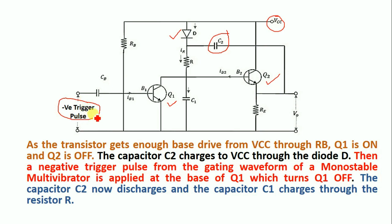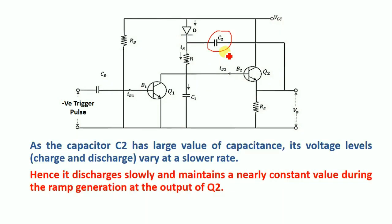A negative triggering pulse is applied using a monostable multivibrator. When this negative triggering pulse is applied to the base of transistor Q1, Q1 goes into the OFF condition. When Q1 is OFF, capacitor C2 discharges through capacitor C1, and C1 charges through resistor R. Since C2 has a large value, its charging and discharging rate is very slow, so the voltage across C2 almost maintains a constant value during ramp generation at the output across emitter resistance RE, that is V0.